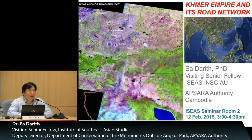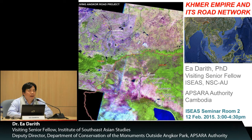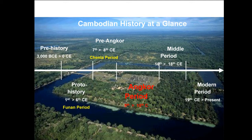Thank you to Dr. Darith Heng. Today I will talk about two main things: one is the Khmer Empire, and the second is the Road Networks. First of all, I would like to show you all Cambodian history at a glance. History divides Cambodian history into prehistory, proto-history or Funan period as called by the Chinese, and pre-Angkor or Chen La as called by the Chinese, and the Angkor period, the middle period, and the modern period.